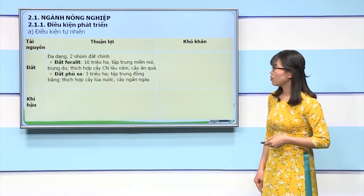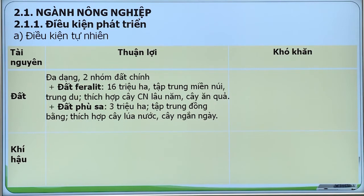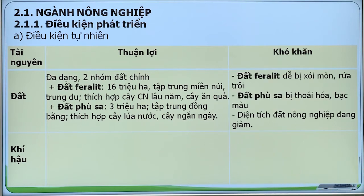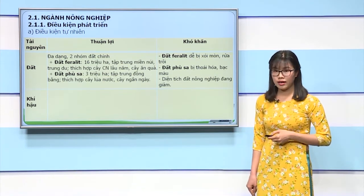Về tài nguyên đất, đất của nước ta có đặc điểm là đa dạng, có 2 nhóm đất chính. Đất Feralit chiếm khoảng 16 triệu hectare, tập trung chủ yếu ở miền núi và Trung Du, thích hợp với các cây công nghiệp lâu năm, cây ăn quả. Đất Phù Sa chiếm khoảng 3 triệu hectare, tập trung chủ yếu ở đồng bằng, thích hợp với các cây lúa nước, cây ngắn ngày. Về khó khăn, đất Feralit dễ bị sói mòn, rửa trôi; đất Phù Sa bị thoái hóa bạc màu; diện tích đất nông nghiệp đang có xu hướng giảm do quá trình công nghiệp hóa và nhu cầu sử dụng đất cho nhà ở ngày càng tăng.